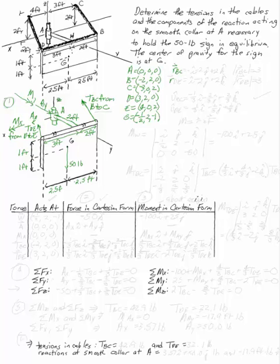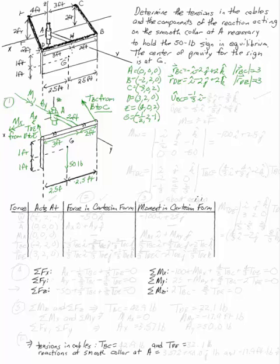Now I need position vectors for the two cables. The position vector RBC from B to C gives -i - 2j + 2k. The position vector RDE gives i - 2j + 2k. In both cases the magnitude is 3, so the unit vector along BC is (-1/3)i - (2/3)j + (2/3)k, and along DE is (1/3)i - (2/3)j + (2/3)k.